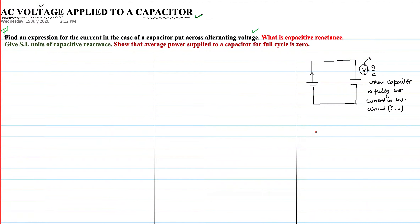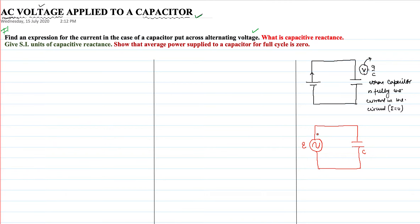Let's look at this diagram. This is the source of alternating input voltage. This is the capacitor of capacitance C. When this alternating voltage is applied across capacitor C, the capacitor will limit the current as well as regulate the current. Now we will do the corresponding mathematics of the same physics.